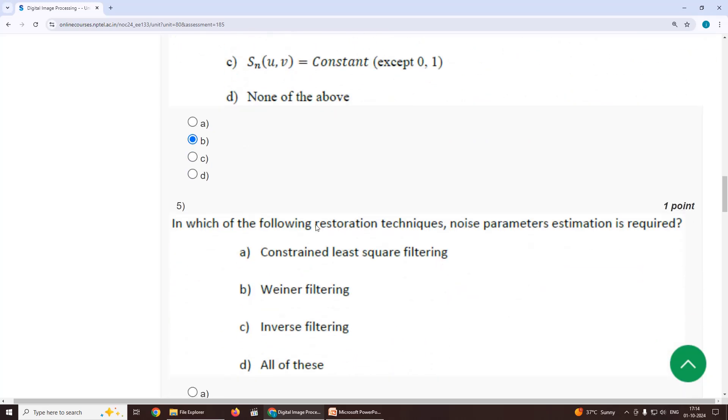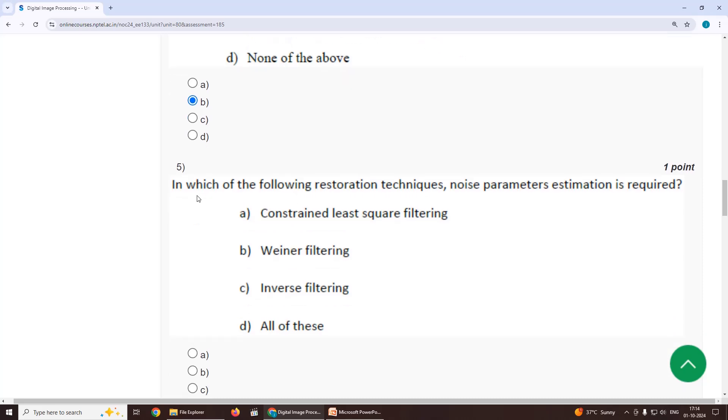Fifth one, in which of the following restoration techniques noise parameters estimation is required? Our option is option A, constrained least square filtering.